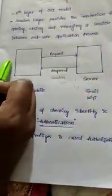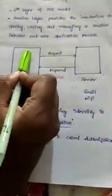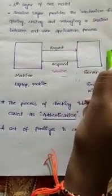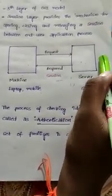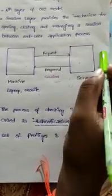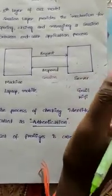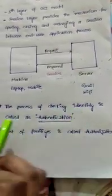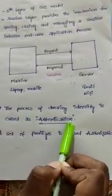If the machine wants to connect to the server, it will send a request to the server, so the server will verify the details of the user. For example, if we want to connect to Wi-Fi, it will ask for a password. If the password is correct, then only it will allow us to access the Wi-Fi. It will check our identity, so the process of checking identity is called authentication.